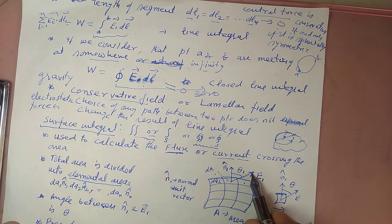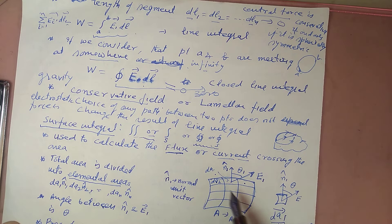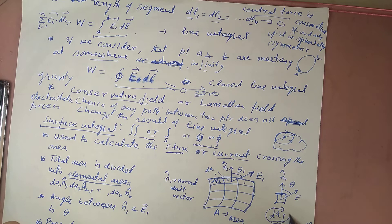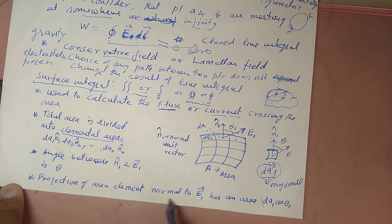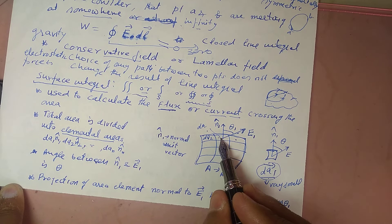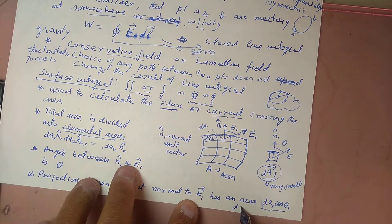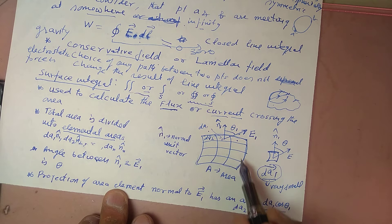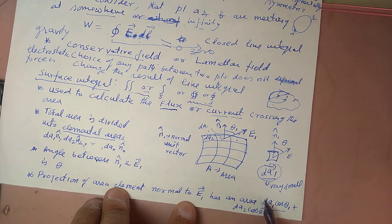The electric field lines are oriented in a certain direction and make an angle theta with the normal to each area element. The projection of the area element normal to E is given by dA cos(theta). For the first element it is dA1 cos(theta1), for the second it is dA2 cos(theta2), and so on.